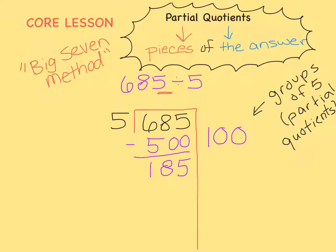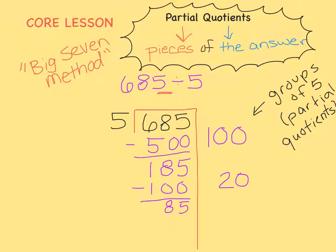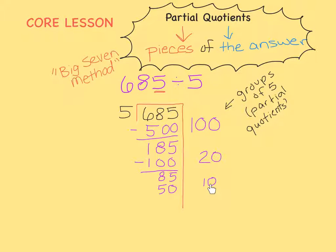Let's think of another number that's easy to multiply 5 by that's less than 185. I know 5 times 20 equals 100, so I put the 20 on the outside of the 7, and 100 on the inside, and we subtract again. Now let's do 5 times 10, which equals 50. My 10 groups goes on the outside, and 50 goes on the inside. 85 minus 50 equals 35.